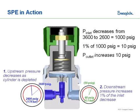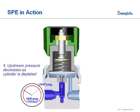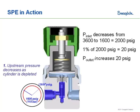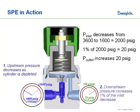This is all just because of that balancing of forces internal in our regulators. Continuing the example, if we dropped another thousand psi because we continue to deplete our pressure in our cylinders, now we're down from 3600 to 1600. 1% of that decrease is 20 psi, so our outlet pressure is going to rise from 50 psi up to 70 psi.